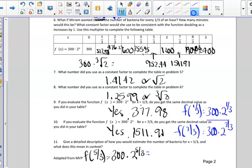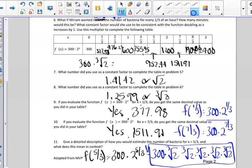and essentially what does that mean? Well, what that means is that we're going to take our multiplier and multiply it five times, and in this case, what we would be multiplying by is the cube root of two five times. So we're taking the cube root of two, and we're going to write it out five times, and that would give us the estimate of the number of bacteria when x was five-thirds.